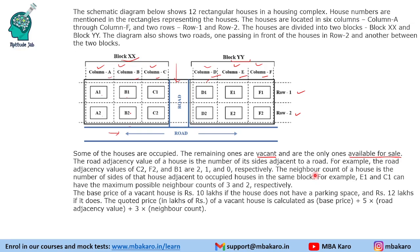Neighbor count is the number of sides of a house adjacent to occupied houses in the same block. For example, E1 can have a maximum neighbor count of 3, and C1 can have a neighbor count of 2 — B1 and C2 can be its neighbors. Neighbor count is counted only for occupied neighboring houses. So if a neighboring house is vacant, it does not count. Neighbor count applies to the calculation only if adjacent houses are occupied.